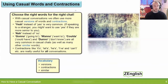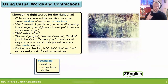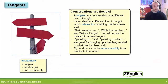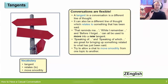Some useful vocabulary here as well before we move on. Now, we'll be talking about tangents — a bit of a tricky word, but it's quite useful here. Looking at our signposts, tangents are kind of things going off in different directions.